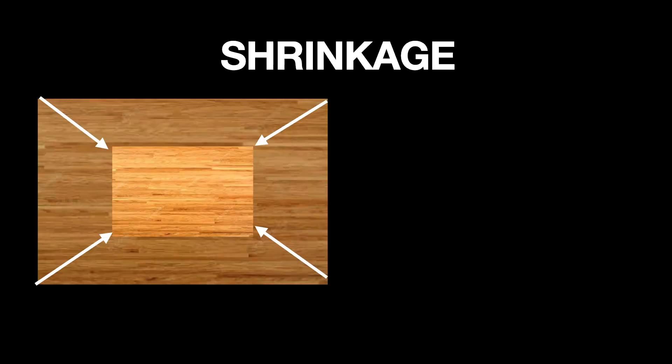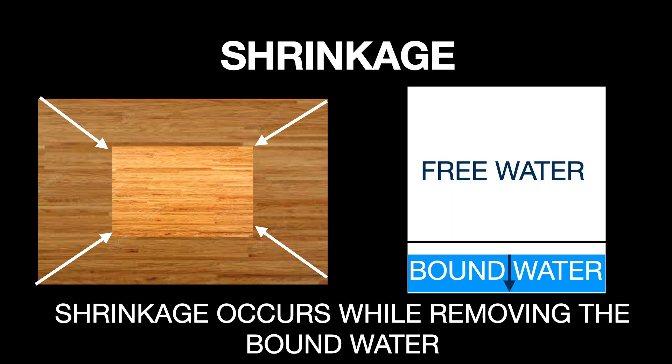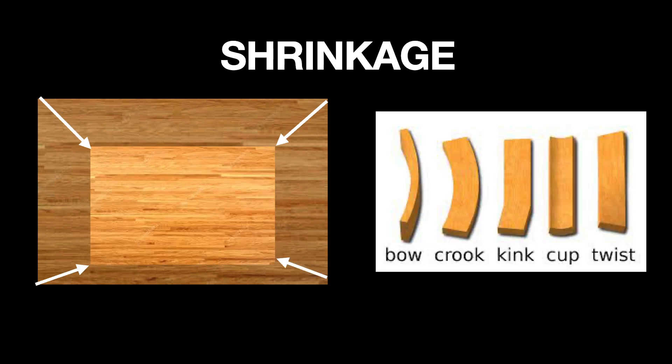Removing just some of the bound water can take as much as 30% of your overall drying time. As the wood dries, it will start shrinking, but it only shrinks during this phase of removing the bound water. Uneven shrinkage is the reason for wood degrade.